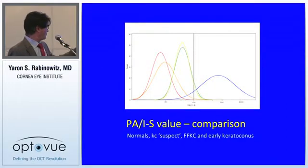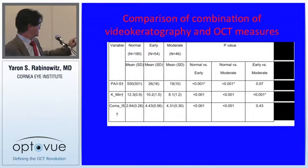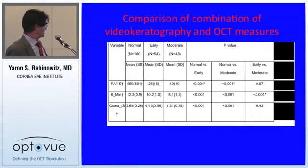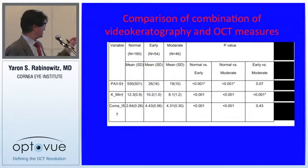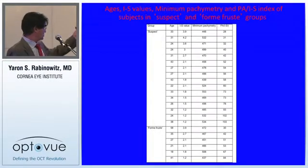Looking at four groups — normal, suspect, early keratoconus, and form fruste — the PIS value separates these groups out very nicely. Comparing multiple variables, the PIS index was statistically more significantly better at separating normals from early keratoconus patients. We could use it to show which patients with form fruste and keratoconus suspect were distinguishable from normals.